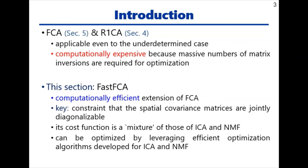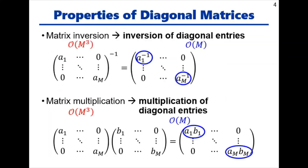The key here is that it introduces the constraint that the spatial covariance matrices are jointly diagonalizable. Interestingly, the cost function of FastFCA turns out to be a mixture of those of ICA and NMF. So, FastFCA can be optimized by leveraging efficient optimization algorithms that have been developed for ICA and NMF. FastFCA utilizes the well-known property of diagonal matrices that matrix inversion amounts to mere inversion of diagonal entries, which can be computed efficiently. By exploiting this property, FastFCA can compute matrix inversions in FCA efficiently, leading to efficient BSS.